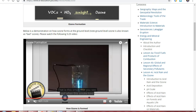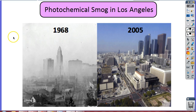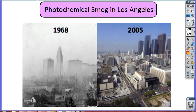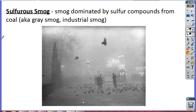The other type of smog is sulfurous smog. Here's a picture of photochemical smog in Los Angeles — 1968 before the Clean Air Act compared to 2005 after. It's much better, though it still gets smog. Sulfurous smog is dominated by sulfur compounds from coal, also called gray smog or industrial smog — the type seen in Mongolia. This isn't as much of an issue in the U.S. anymore because the Clean Air Act has made the air significantly cleaner.